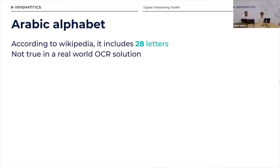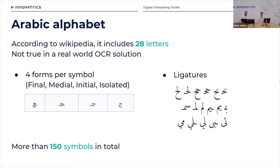however, in a real-life solution it just does not stand. It's different. The way a letter looks in Arabic really depends on the context, or on the surrounding letters. Arabic letters can have up to four different forms — so-called final, medial, initial, and isolated. So it roughly multiplies your 28 letters by a factor of 3 or 4.